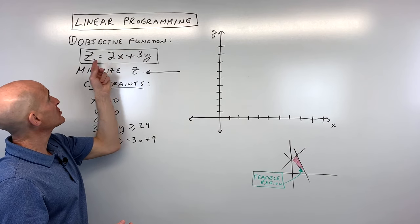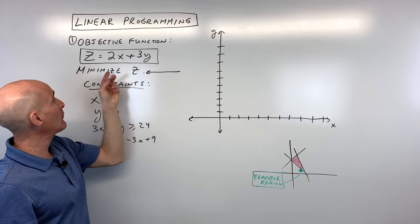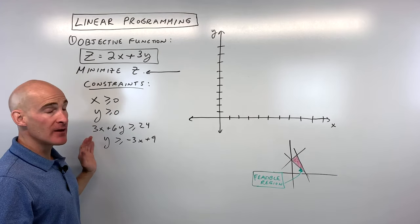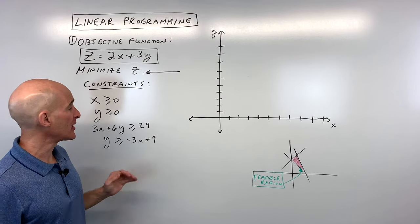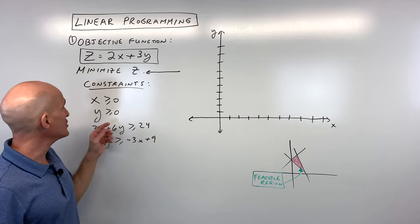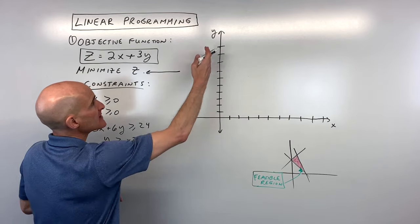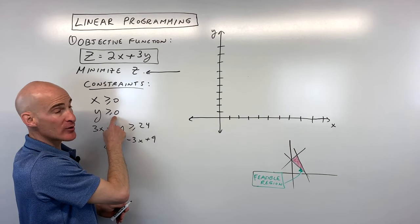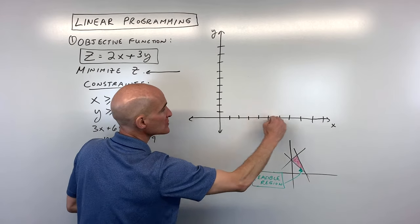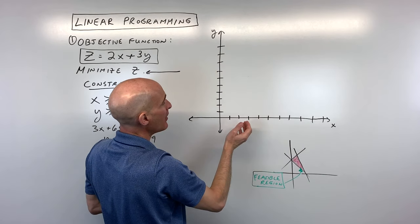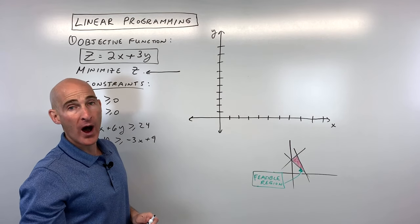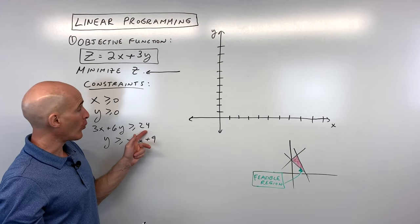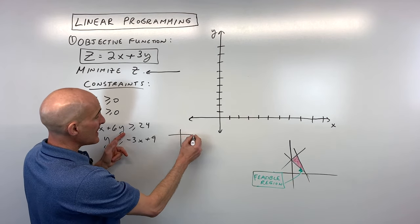For number one, our objective function is z equals 2x plus 3y, and we want to minimize z — find the smallest value for z. The constraints are our restrictions, our inequalities that we graph to get our feasible region. x is greater than or equal to zero — that's a vertical line, and greater than means shading to the right. y is greater than or equal to zero — horizontal line, shading above. That puts us in the first quadrant. We also have 3x plus 6y is greater than or equal to 24.